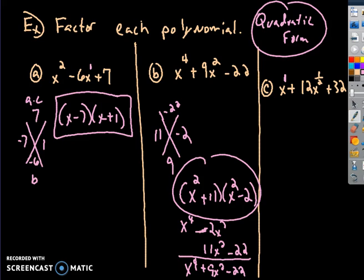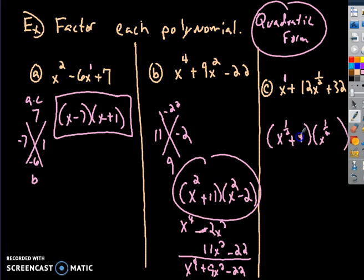I'm pretty much out of time, but the last example factors the same way — it will be (X^(1/2) + 4)(X^(1/2) + 8). That's all. Good luck.